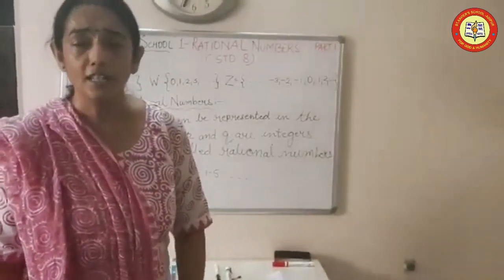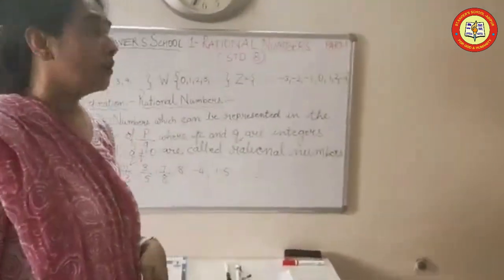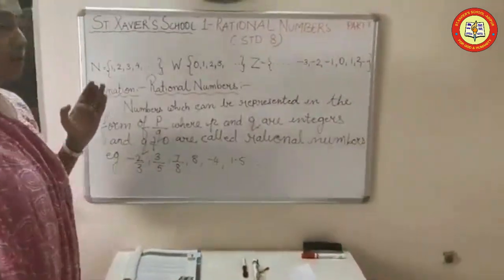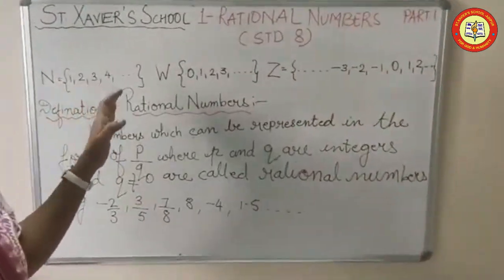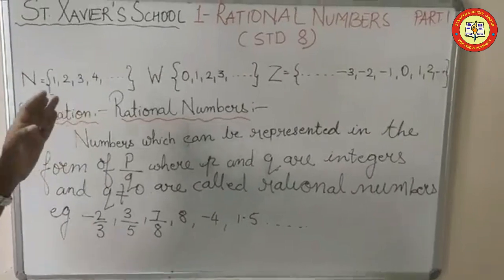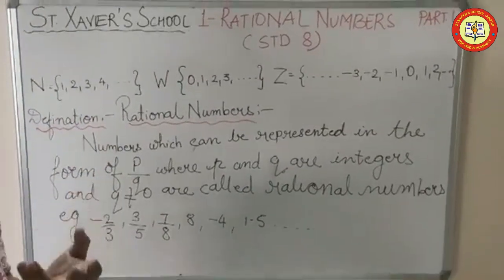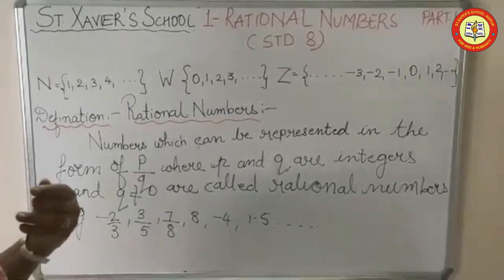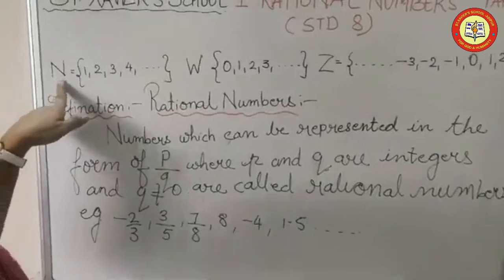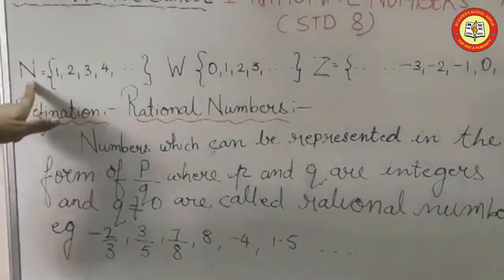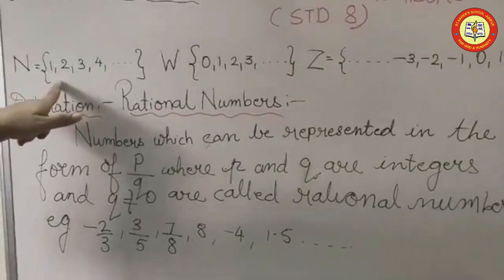Before we start, let us take a quick look at what we have studied before. We have studied about natural numbers. Natural numbers are those numbers which we use for counting — we always start with 1, 2, 3; we never start with 0. The set of natural numbers is denoted by the capital letter N, and its smallest natural number is 1.